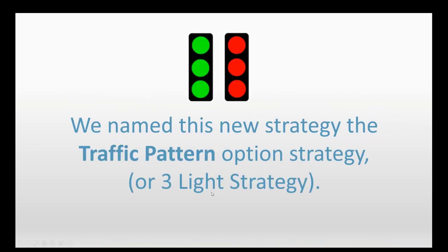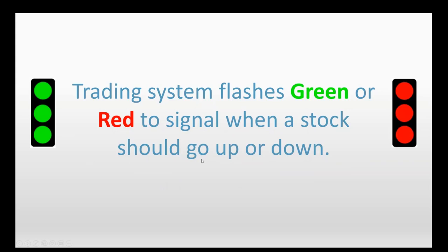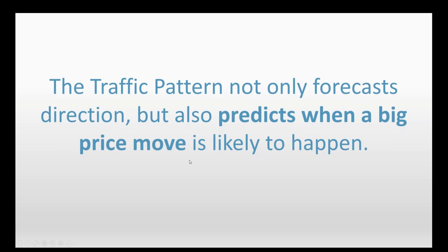We named this new strategy the traffic pattern option strategy. The three green lights look almost like a traffic pattern, so we call it the traffic pattern strategy. The trading system flashes green or red to signal when a stock should go up or down — a very simple strategy. Instead of tracking just one condition, we're tracking three. The traffic pattern not only forecasts direction but also predicts when big moves are likely to happen in the stock.